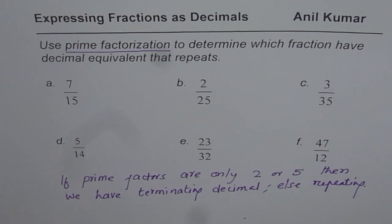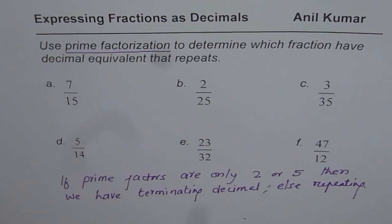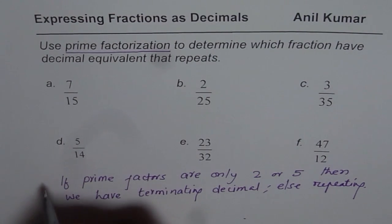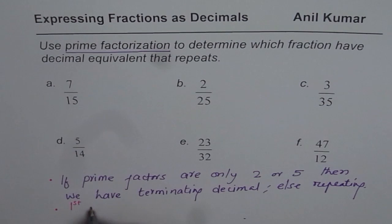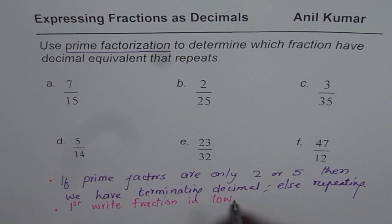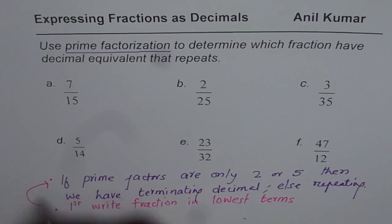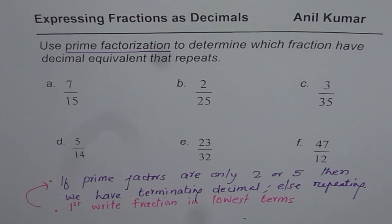So let us begin from the very first one, 7 over 15. I would like you to highlight one more step: first write fraction in lowest terms, and then do the prime factorization. We will see in the next video why this is helpful. Here we have already given you fractions in lowest terms.